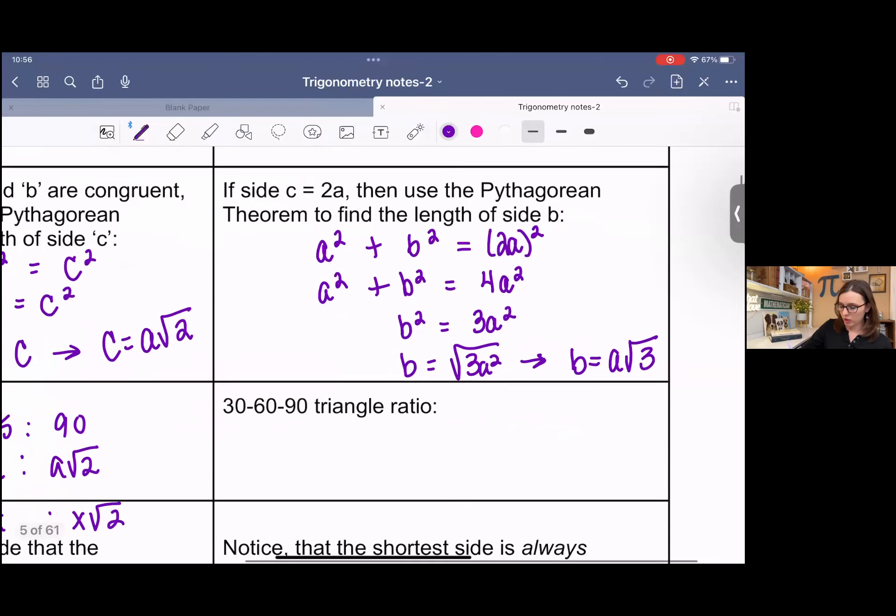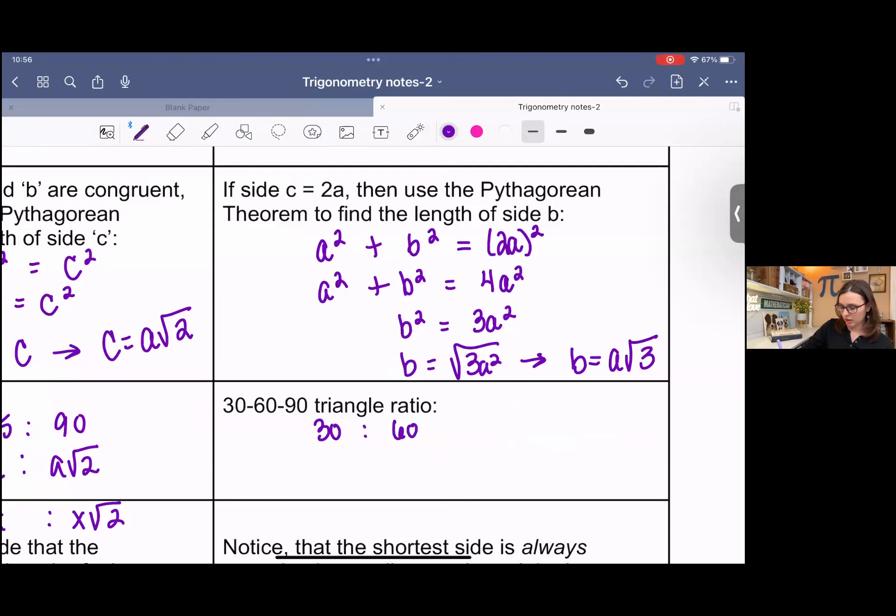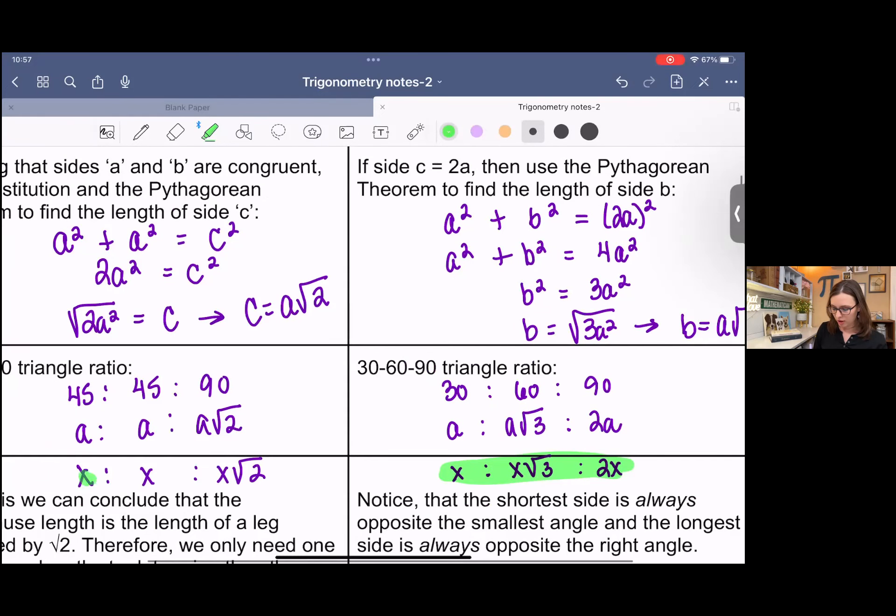So now we can write this ratio, 30-60-90, as A, A root 3, 2A. Or you could use X's instead. You're not going to be expected to derive this every time if you're taking my class, but you will definitely be seeing those ratios over and over again, especially if you go further along in the course, trigonometry course, you're going to be seeing these specific triangles a lot. So it's going to be good to familiarize yourself with these ratios. So this is a very important thing to keep in mind. If you have like a running sheet of formulas, then that would be really good to put on there.